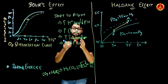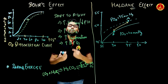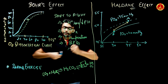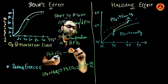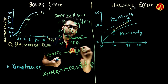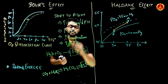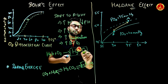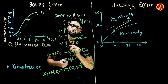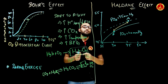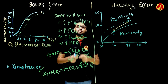When the curve shifts from left to right, there is more delivery of oxygen to the tissues. Hemoglobin and oxygen form oxyhemoglobin. When oxyhemoglobin reaches the capillaries, the increased H+ ions and CO2 cause dissociation of oxygen from hemoglobin, and the released oxygen is taken up by the tissues.